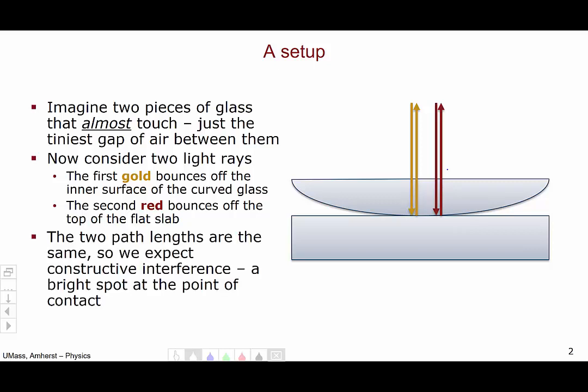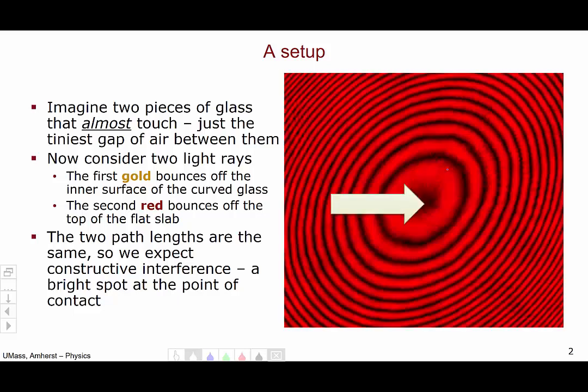Since the two path lengths are equal and the glasses are in contact, we expect constructive interference at the point where the two pieces of glass touch. So there should be a bright spot here. However, when we actually do the experiment, we actually see a dark spot in the resulting pattern where the two pieces of glass touch. We'll talk more about these rings in class.